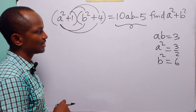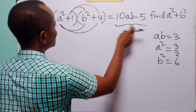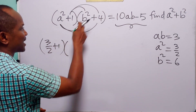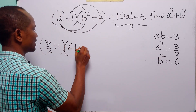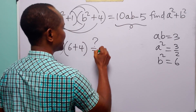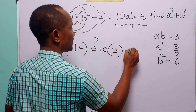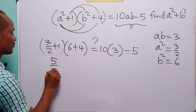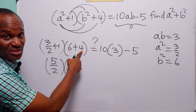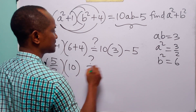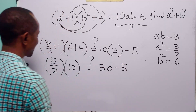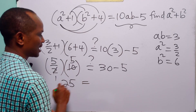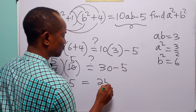Before the final calculation, let us check if our results are correct by substituting into the original equation. We have (a squared plus 1) times (b squared plus 4), that is (3 over 2 plus 1) times (6 plus 4). This gives 5 over 2 times 10. And we need to check if this equals 10ab minus 5, which is 10 times 3 minus 5, giving 30 minus 5 equals 25. Indeed, 5 over 2 times 10 equals 25. So these results satisfy the given equation.